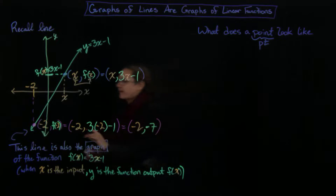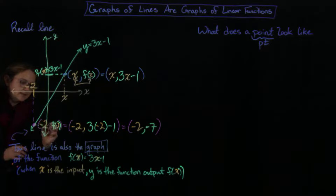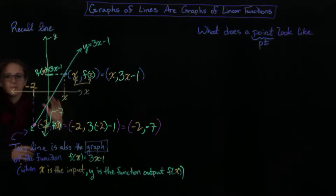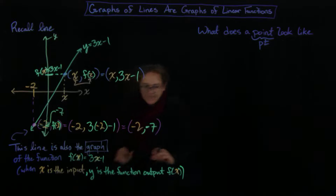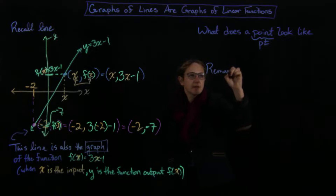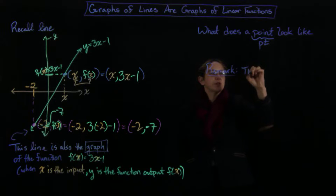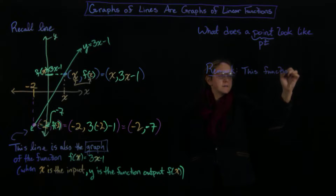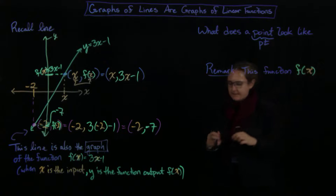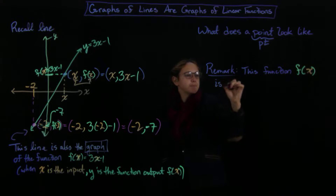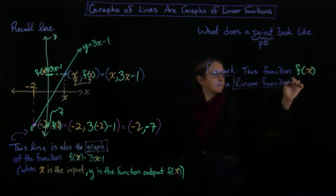So that gives me that this value here is minus 7. Great. Now I wanted to make a remark: this is called a linear function. This function f of x is a linear function — linear, like with line.